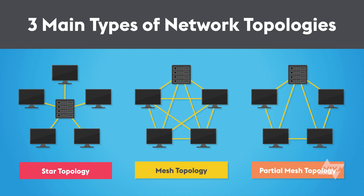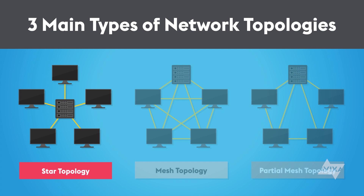Let's start with star. In this layout, all nodes or devices connect to a central point, such as a router, switch, or hub. Stars are hierarchical, and each node has access to the other nodes through the central point. If any one node fails, information still flows. The central device is a single point of failure, however, and if it fails, the whole structure fails.